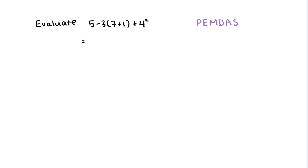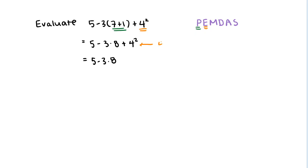The first thing we want to do is evaluate parentheses. This 7 plus 1 — everything else stays the same, but I'm going to evaluate 7 plus 1 to get 8, plus 4 squared. Next, we need to evaluate the exponents. So this comes out to be 5 minus 3 times 8, and then 4 squared is the same as 4 times 4, which is 16. So I'll rewrite that as plus 16.